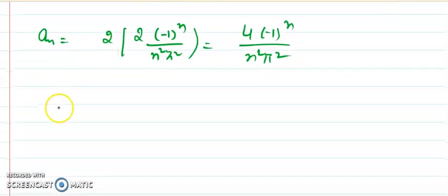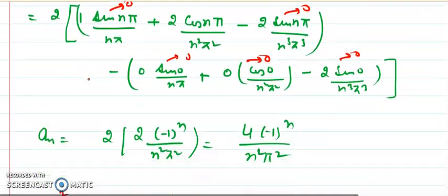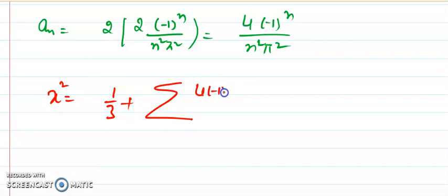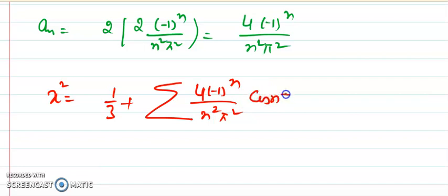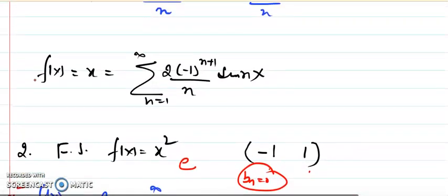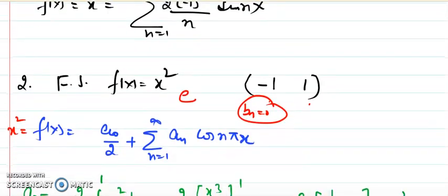So the final Fourier series for f(x) = x² on [-1, 1] is: x² = 1/3 + Σ [4(-1)ⁿ/(n²π²)] cos(nπx), where n goes from 1 to infinity. This is how we can calculate the required coefficients efficiently using the even/odd function properties.